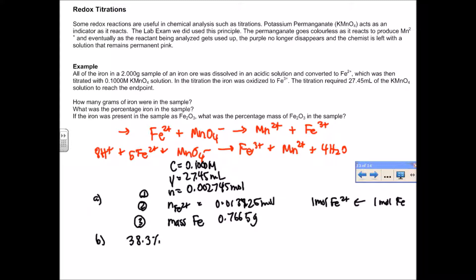In part C, it's saying what if the iron was actually in the sample as Fe₂O₃. If it was in the sample as Fe₂O₃, the ratio between the iron oxide and the Fe²⁺ would not actually be one-to-one, because for every one mole of the iron oxide we actually have two moles of Fe²⁺. When we're working backwards, we know the moles of Fe²⁺ that we had in step two up here, but the equivalent moles of iron oxide is actually half of that amount. The moles of iron oxide here is 0.006825.